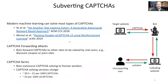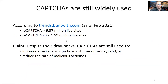Moreover, techniques to subvert CAPTCHAs are becoming more and more advanced with the progress in machine learning. CAPTCHAs can also simply be outsourced to actual humans for very small or no fees. Still, CAPTCHAs are used by millions of websites every day. The main reason is that CAPTCHAs are still effective for rate limiting certain activities, even after considering the methods to circumvent them.